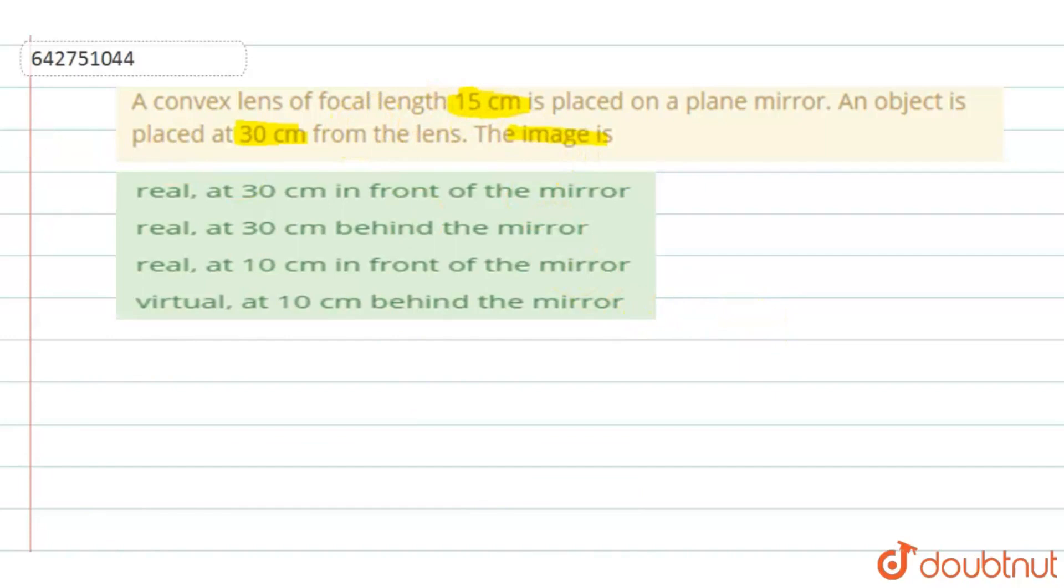A convex lens is placed on a plane mirror, like this. You can write the diagram like this. A convex lens is placed on a plane mirror. So this will be a plane mirror and above you have a convex lens.